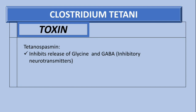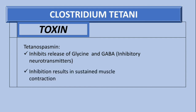The main toxin in this bacteria is tetanospasmin. Tetanospasmin inhibits the release of glycine and GABA, which are inhibitory neurotransmitters. With no inhibition, there is a sustained muscle contraction. This contrasts with botulism, where there is no release of acetylcholine and thus flaccid paralysis. In tetanus, the sustained contraction occurs because inhibition is blocked.